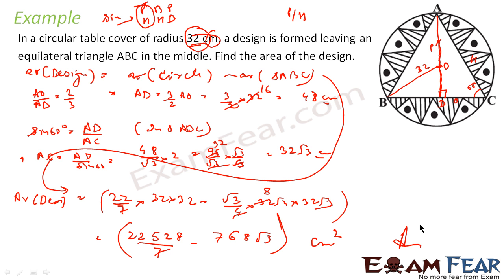Very simple. Area of design is nothing but area of circle minus area of triangle. The challenge is to find the area of the triangle. To find area of the triangle you have to find the side. To find the side, we used AO by AD equal to 2 by 3, because O is the centroid of the triangle and this is the median, altitude — everything coincides. We got AD, then using trigonometry we found the side, and using root 3 by 4 into side squared we found the triangle area.